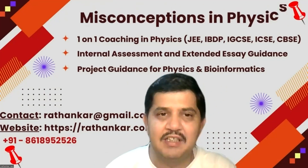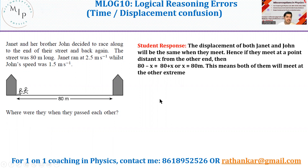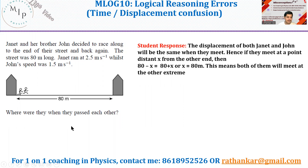Today we are looking at logical reasoning questions. This was a question which a student put across after watching my video. The question says: there are two persons, Janet and her brother John, who decided to race to the end of the street and back again. The street was 80 meters long. Janet ran at 2.5 meters per second while John's speed was 1.5 meters per second. Where were they when they passed each other?